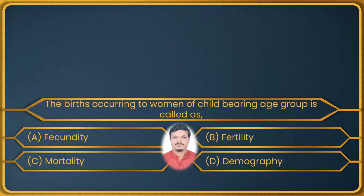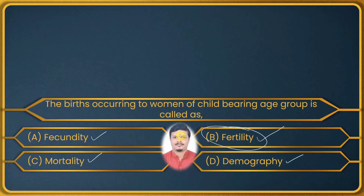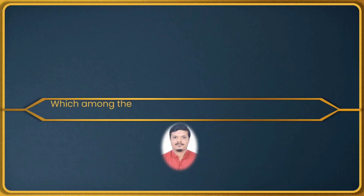This question is from vital statistics. Fecundity means the capacity of a woman to bear children. Mortality is nothing but death, and demography is the study of human population. The question asks about births occurring to women of childbearing age group, which is fertility. So the answer is B: fertility.